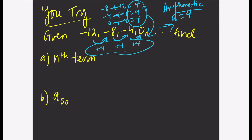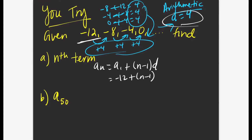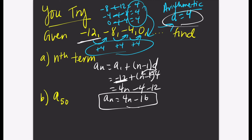Now let's go to part A and find the nth term. The formula is: a sub n equals a sub 1 plus the quantity n minus 1 times the difference. A sub 1 is negative 12 and the difference is positive 4. Distribute the 4: 4 times n is 4n, 4 times negative 1 is negative 4. Bring down the minus 12. Combine like terms and here is our nth term or explicit rule: a sub n equals 4n minus 16.